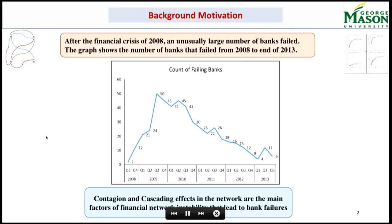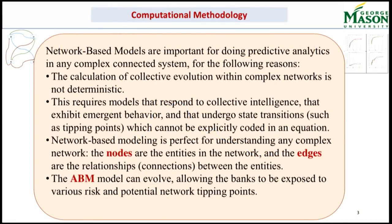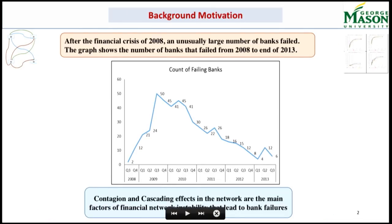As you might know, we had the crisis in 2008. So many banks failed, and the number of banks really started declining. In 2010, you would not believe how much work we had, especially at FDIC — one after the other. There were lots of unregulated, documented and undocumented mortgages. But I'm going to talk about the contagion and cascading effect of the network — they were the main factor that caused those banks to fail.